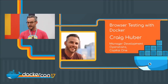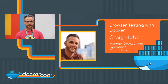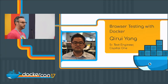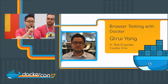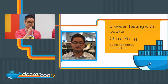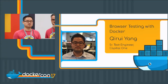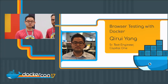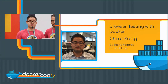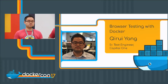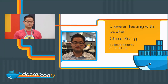We have a number of applications in production running on Docker and we're increasing that number every day. My name is Chiri. I'm a test engineer at Capital One. At the Canada Software Studio, we do a lot of automation for all our applications as part of CI/CD pipelines.